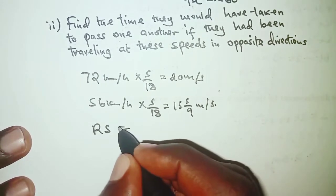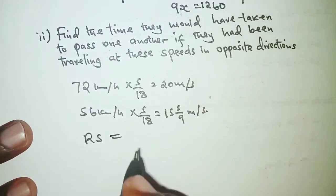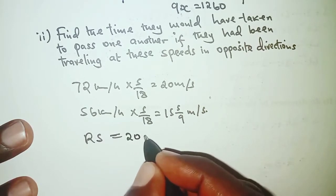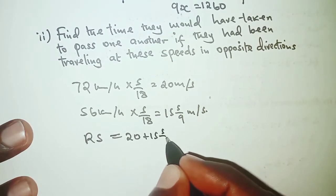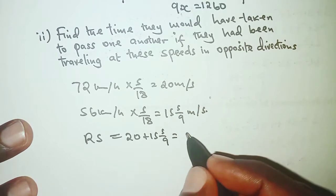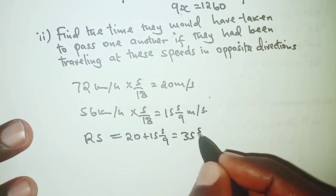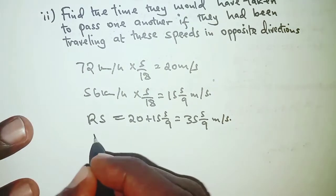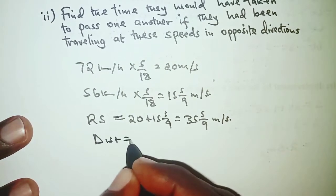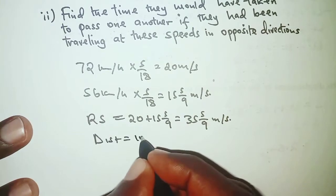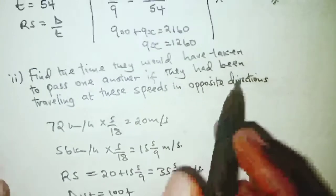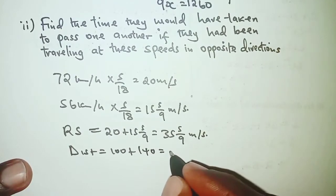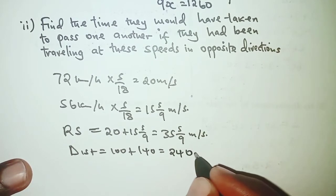The relative speed when moving in opposite directions is obtained by adding the respective speeds: 20 plus 15 and 5 over 9, giving 35 and 5 over 9 meters per second. The distance remains the same — 100 plus x — and x is already 140, so the total distance is 240 meters.